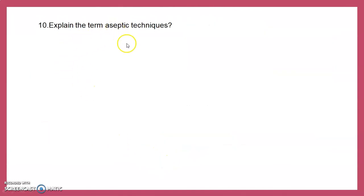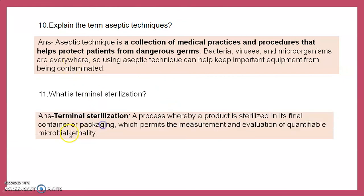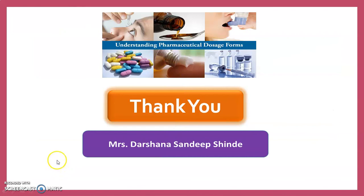Explain the term aseptic technique. An aseptic technique is a collection of medical practices and procedures that help in protection from dangerous germs. Bacteria, viruses, and microorganisms are everywhere, so using aseptic technique helps keep important equipment from being contaminated. Terminal sterilization is a process whereby the product is sterilized in its final container or packaging, which permits the measurement and evaluation of quantifiable microbial lethality. Thank you very much for attending this practical session.